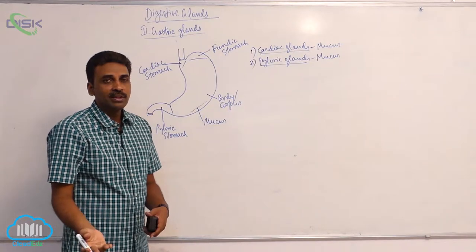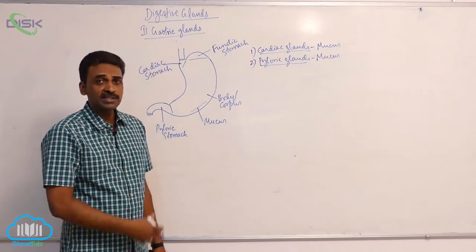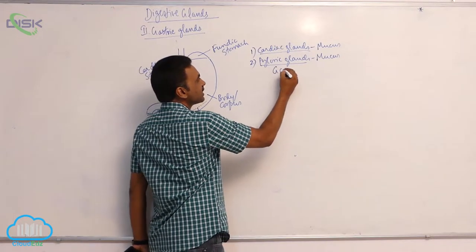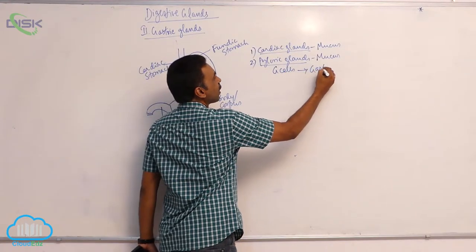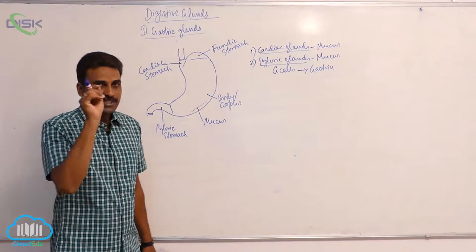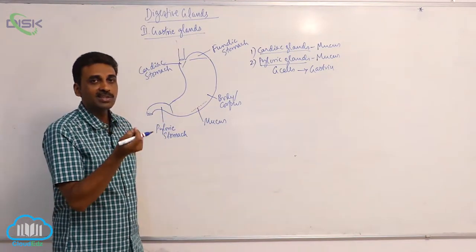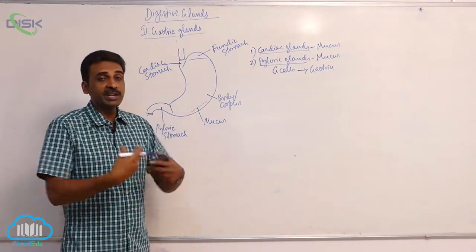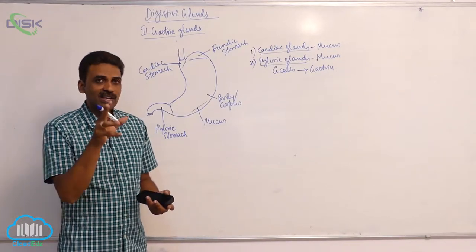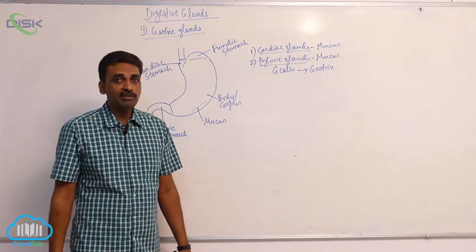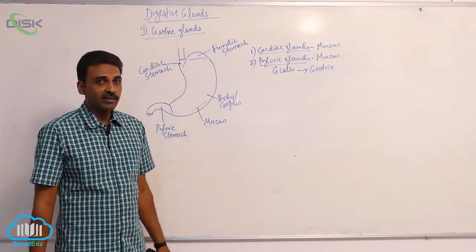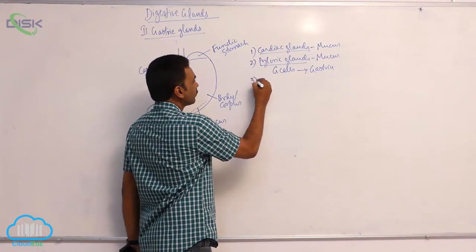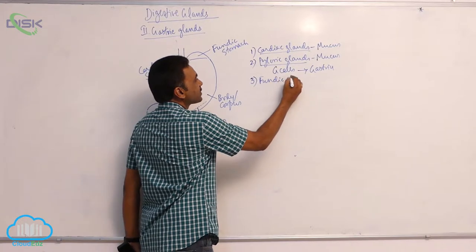The major secretions of pyloric glands are also mucus, produced by neck cells or goblet cells. Apart from this, pyloric glands also contain G cells. G cells produce a hormone called gastrin. Whenever food enters the stomach, gastrin is responsible for stimulating secretion of gastric juice.